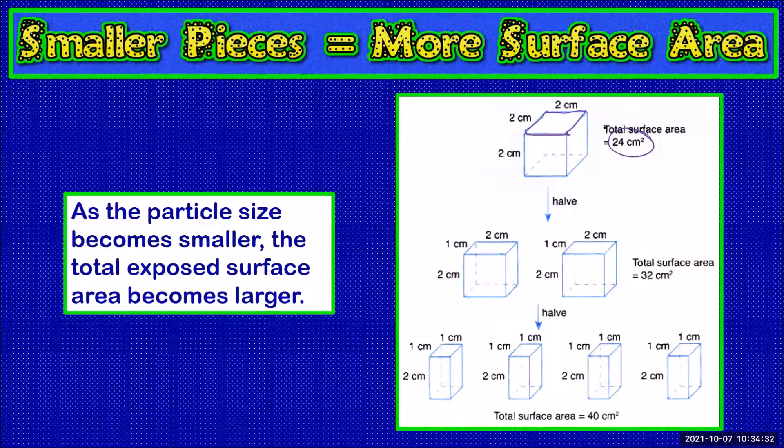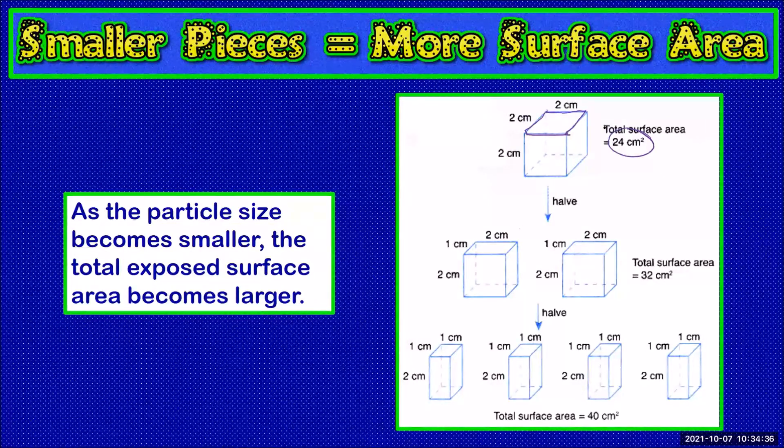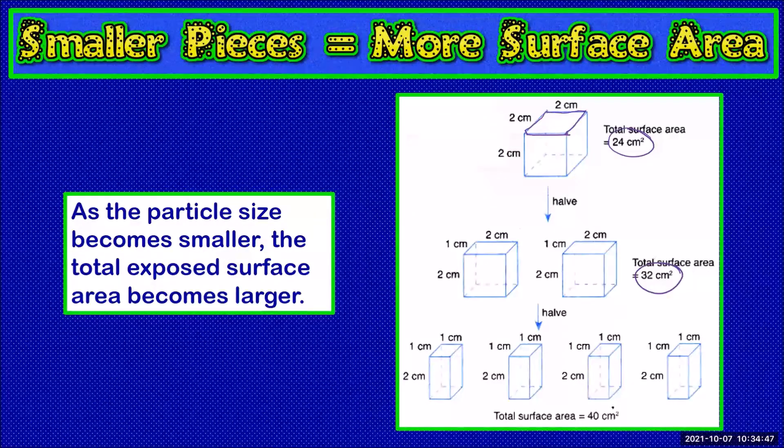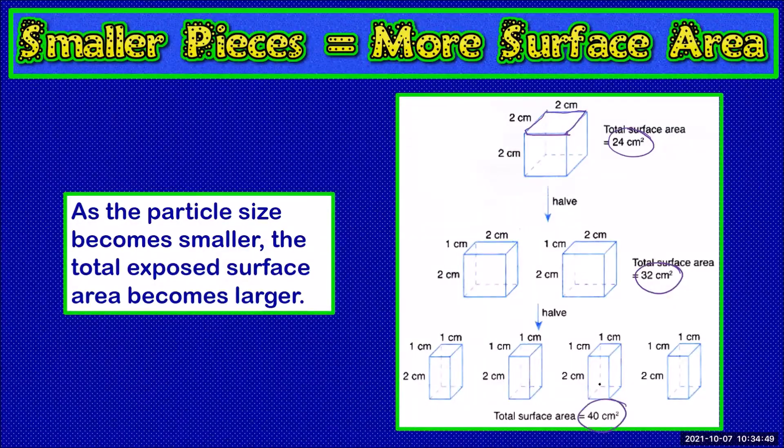If we chop it in half now we have two blocks each 2 cm x 1 cm x 2 cm and the total surface area now is 32 cm squared. If we chop each of these in half the total surface area is 40 cm squared.